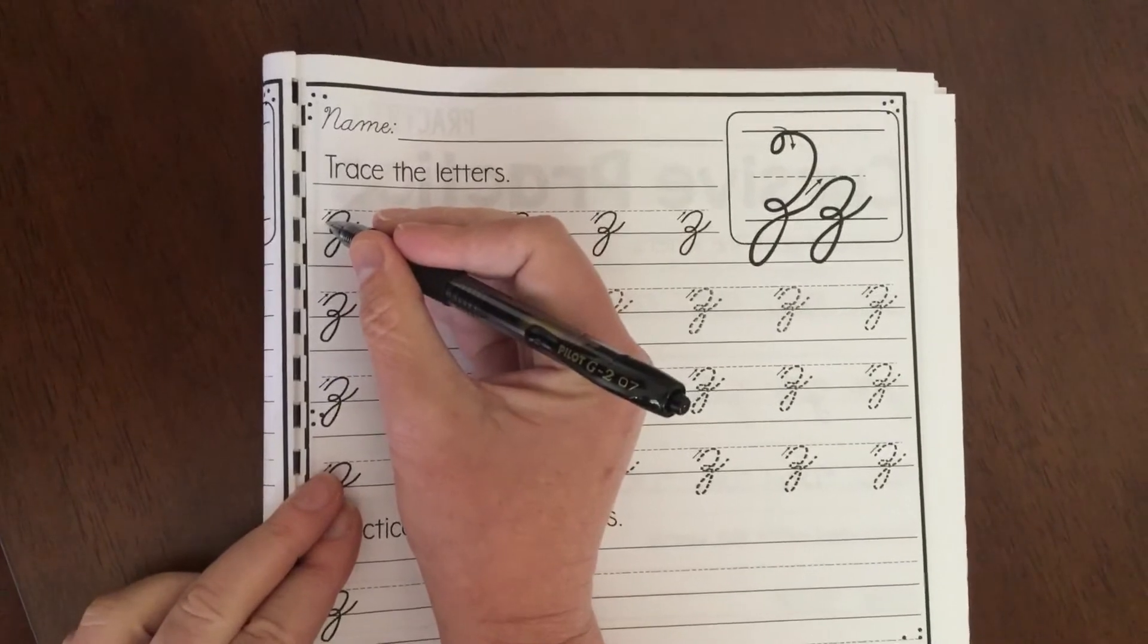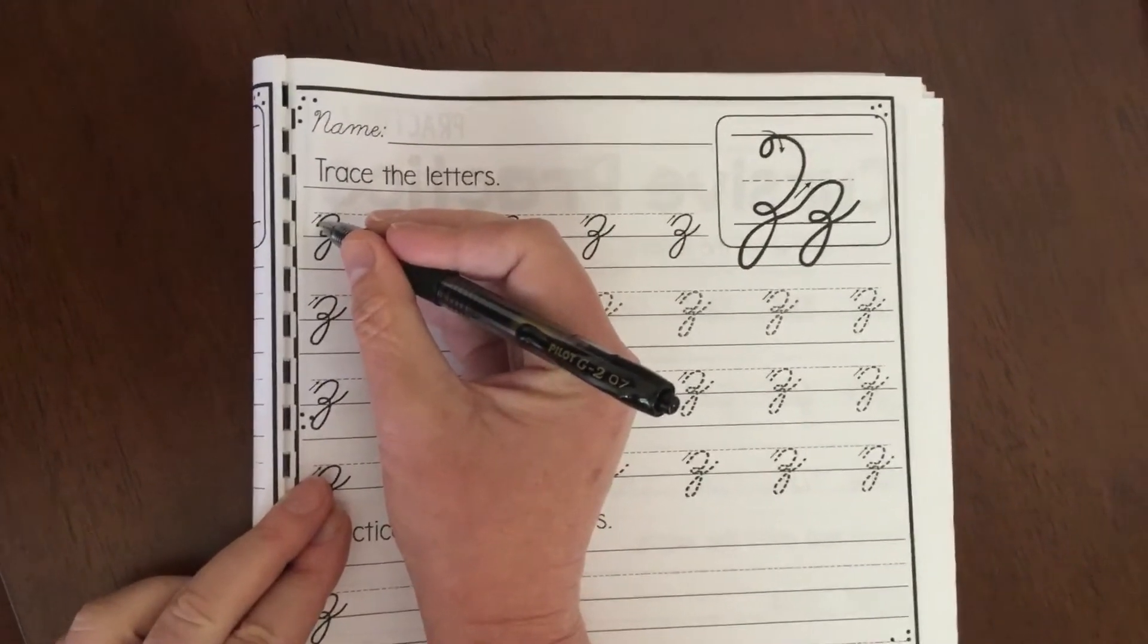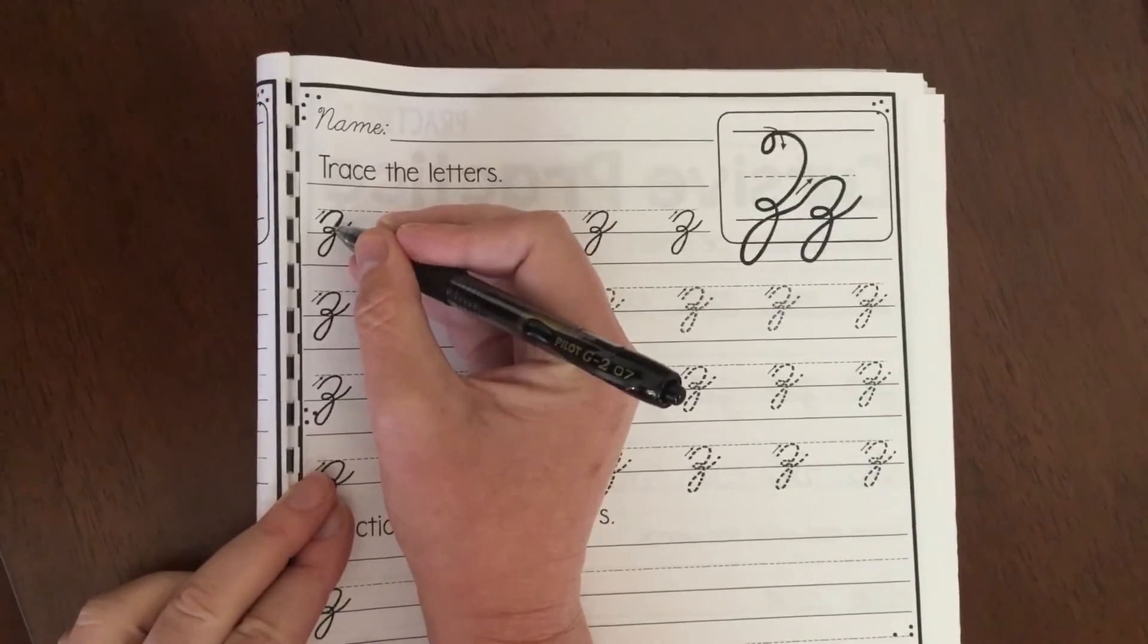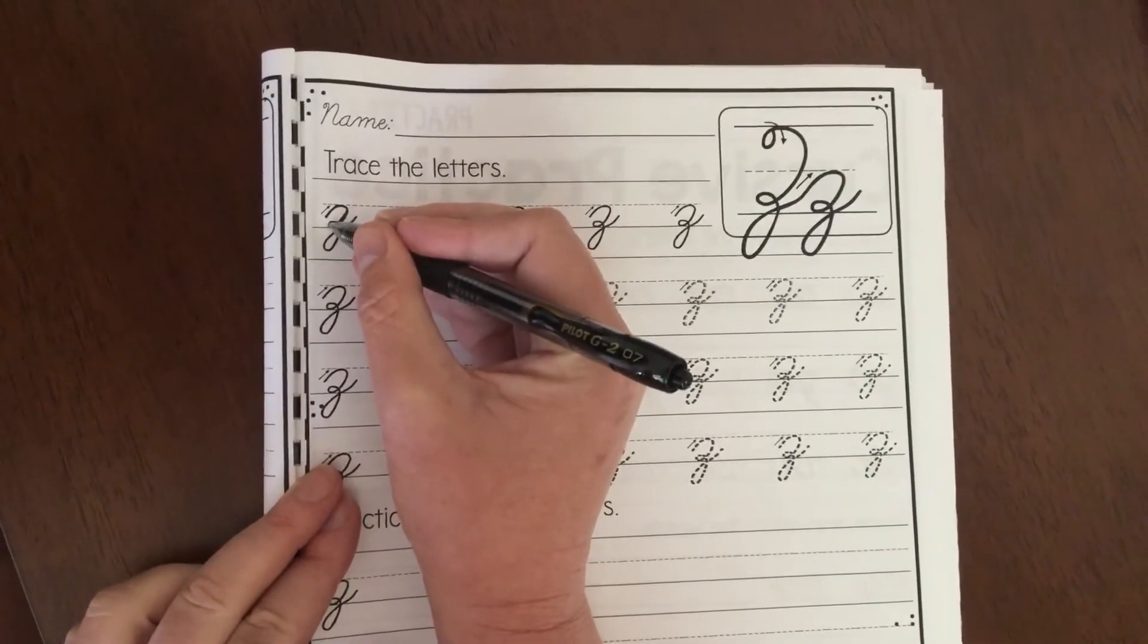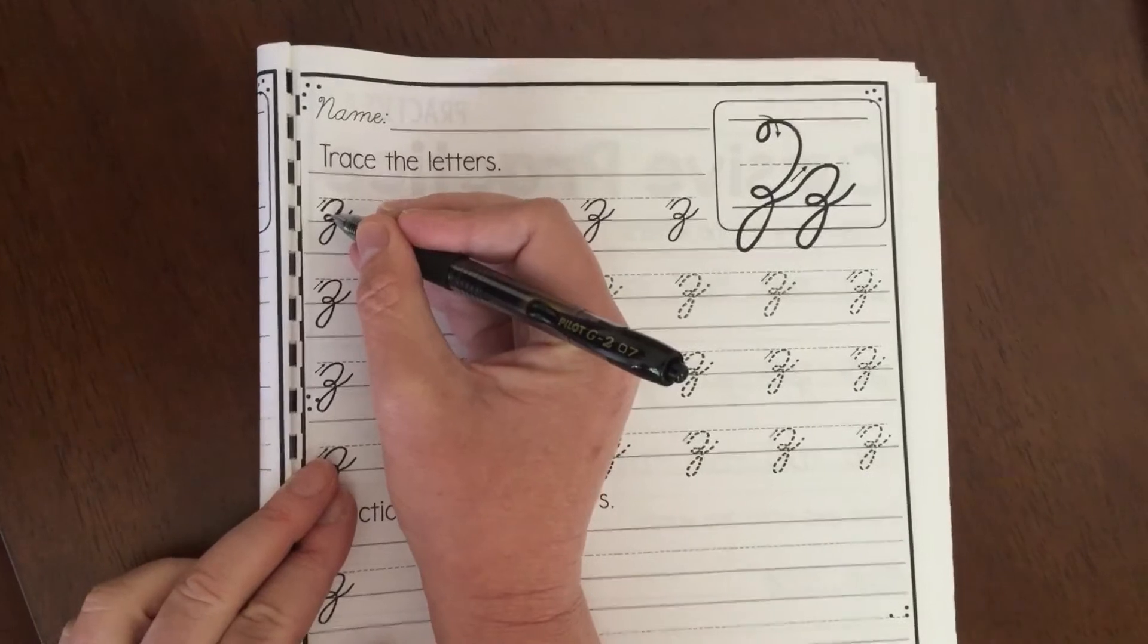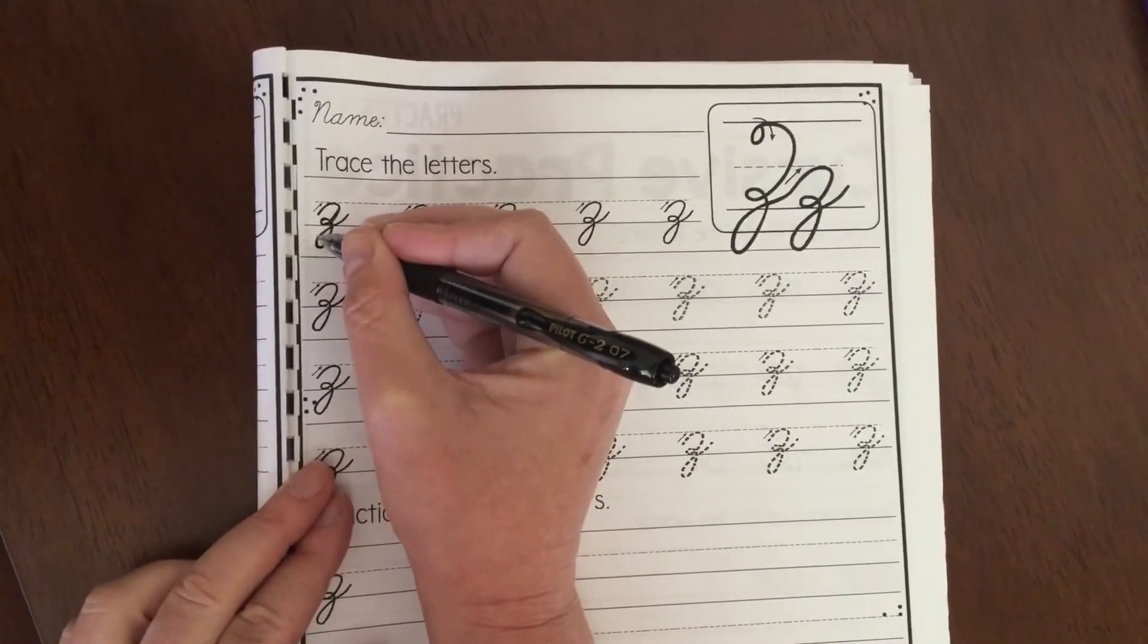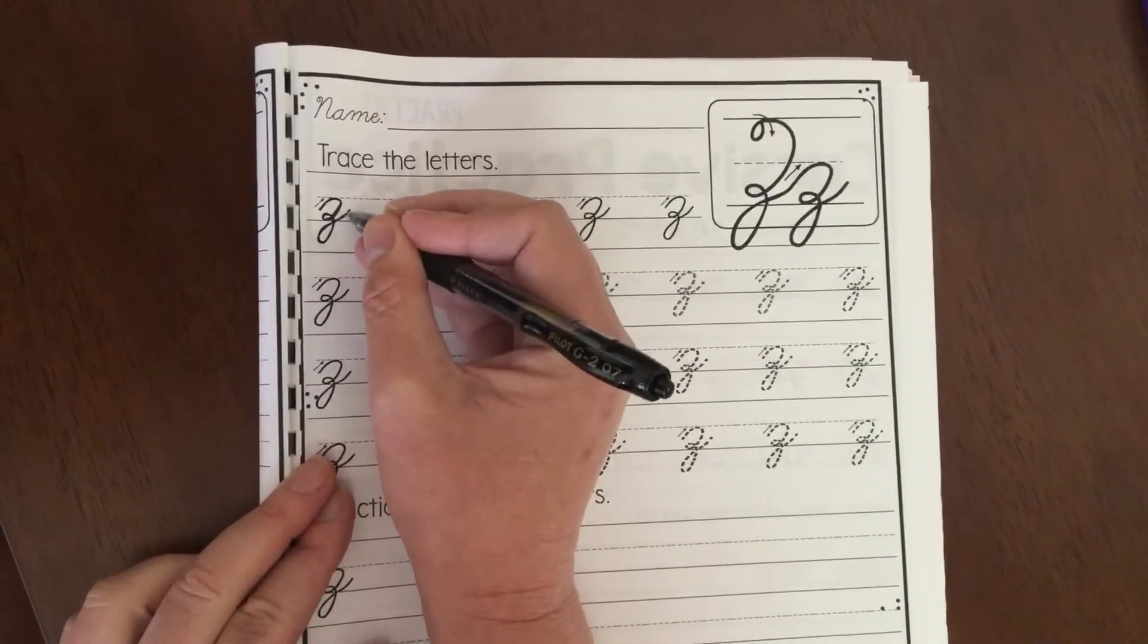You start midway between base and midline. You go up and then you drop back down to the base. Do a little curly Q towards the edge of your paper and then keep going down again and then go back towards that front edge of your paper. Curl around and attach.